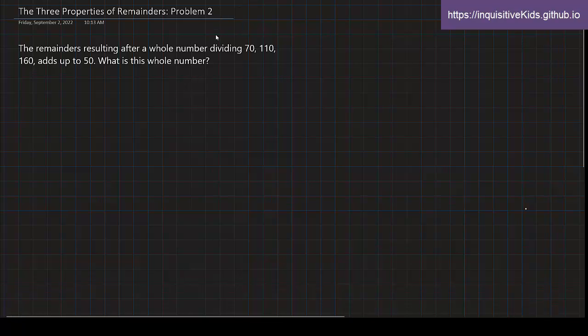So whenever you have something like this, let's say the whole number is capitalized A. So it would not be A divided by 70, but instead 70 divided by A. So is 110 divided by A, and 160 divided by A.